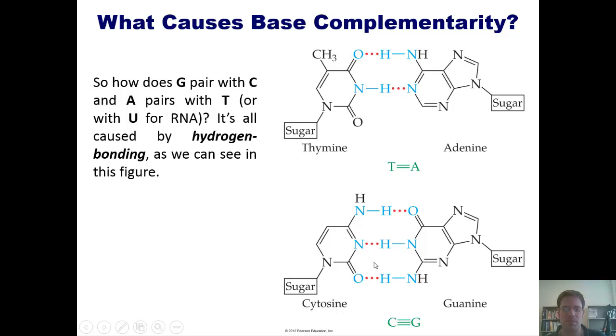You should note, by the way, that cytosine and guanine have three hydrogen bonds between them, while adenine and thiamine only have two. Hence, when you have DNA that is rich in CG pairs, it tends to actually take more energy to break it apart than DNA that doesn't have as high of a CG ratio.